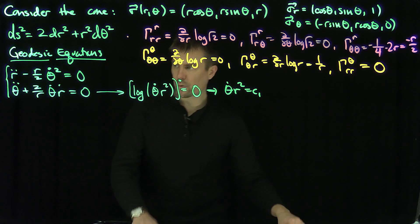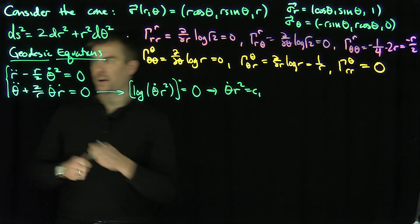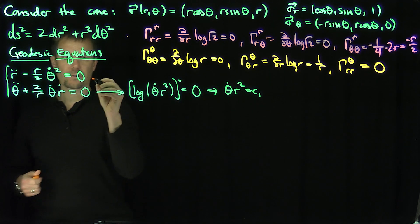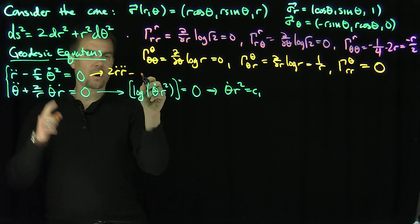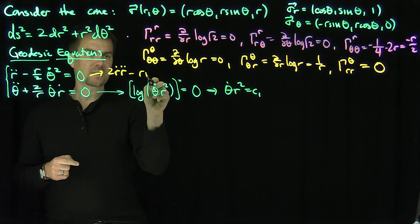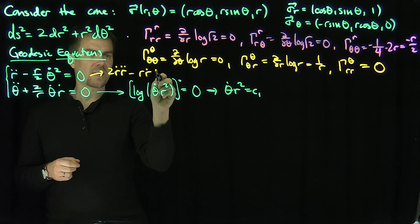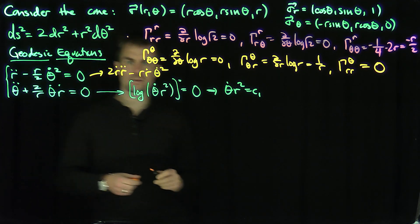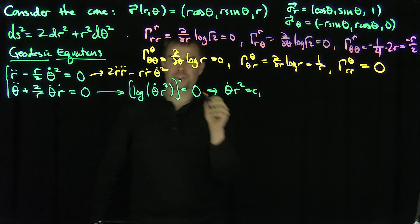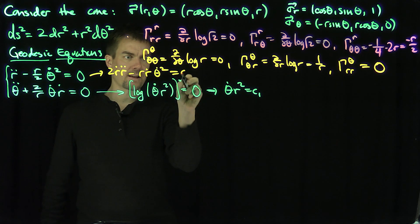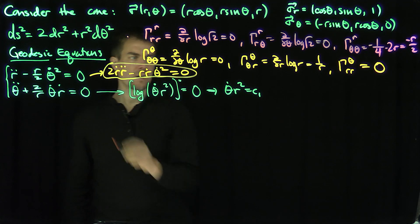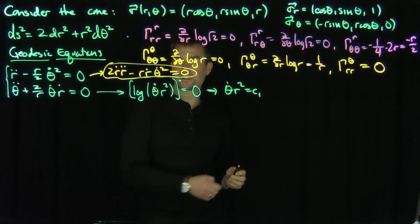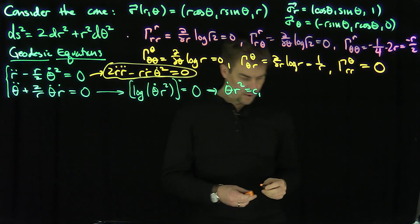I'm going to manipulate the first equation by multiplying by 2ṙ, giving 2ṙ r̈ minus ṙ · r · θ̇² = 0. This is more useful because now I want to consider another differential invariant.